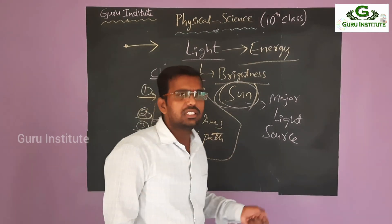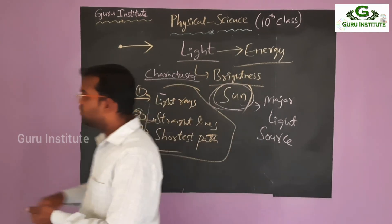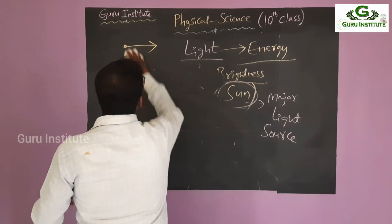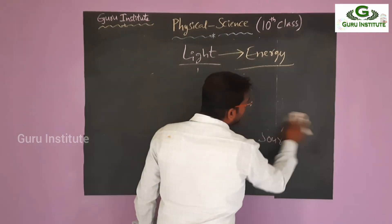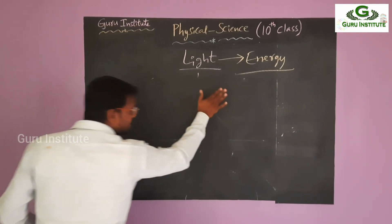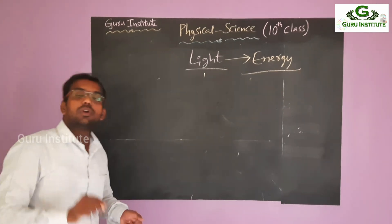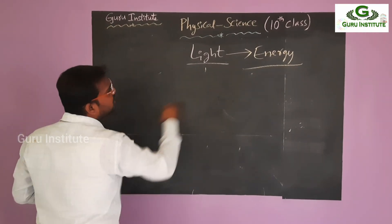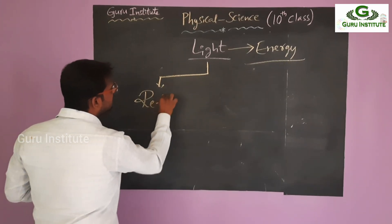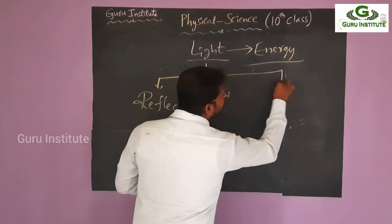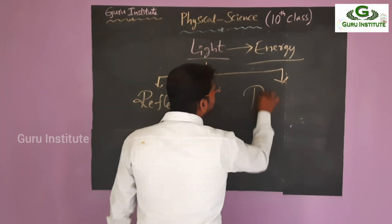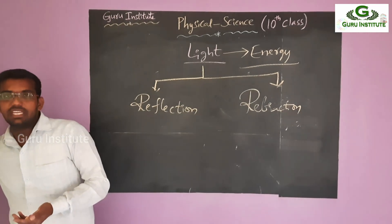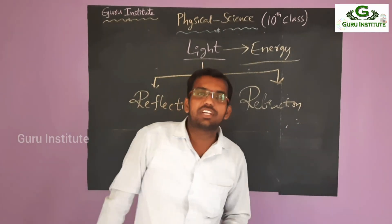Coming to the properties — every person has its unique identity, and like that, light also has some properties. What are those properties? Only two properties are there for light. The first property is reflection. The second property of light is called refraction. Are you listening to these words? These are our lesson names. Reflection and refraction — these two are the basic properties of light.